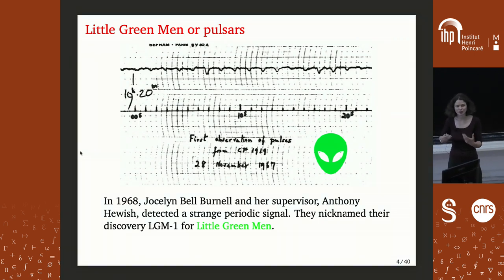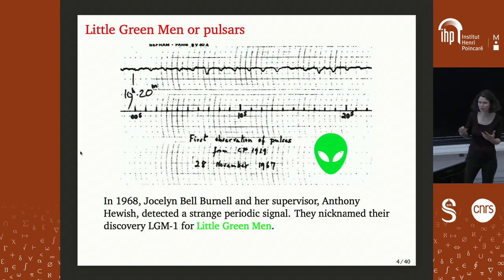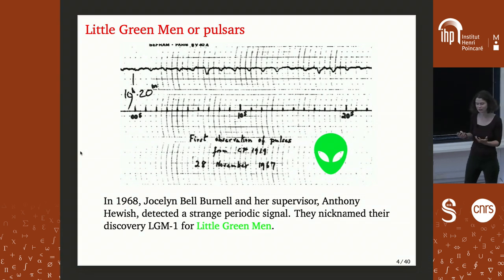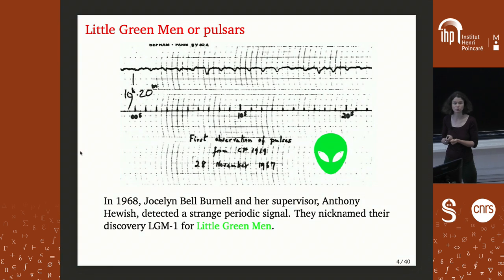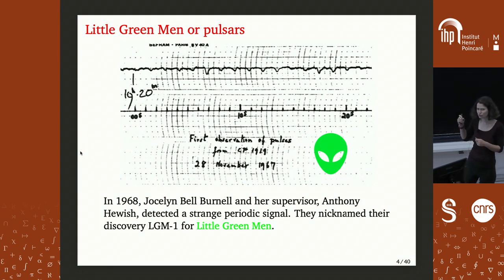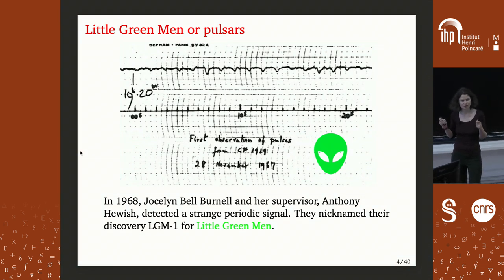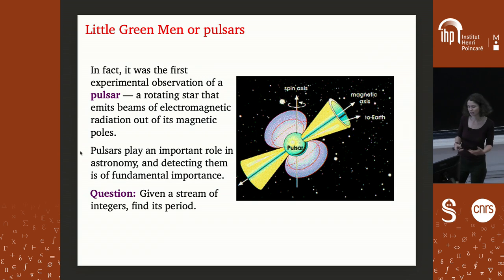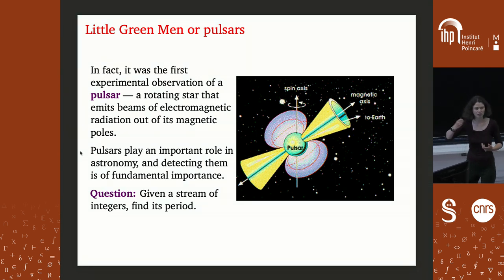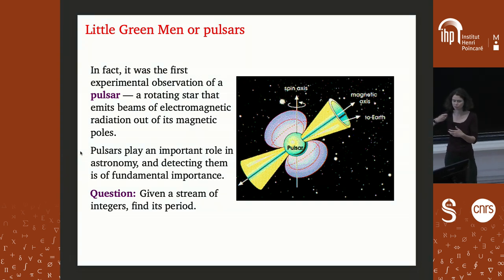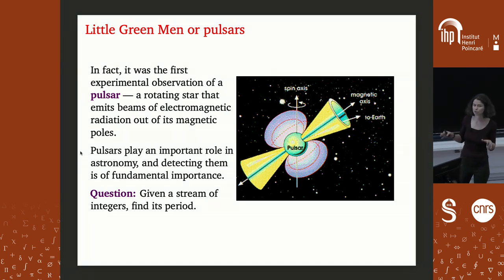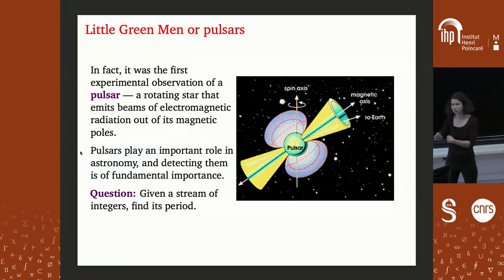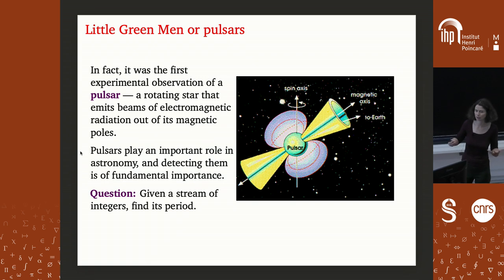Before the algorithms, let me present two applications. The first comes from astronomy: in 1968, Jocelyn Bell Burnell and her supervisor Anthony Hewish discovered a very strange, very periodic signal from space. At first they thought it might be aliens, but it turned out to be the first experimental observation of a pulsar — a rotating star emitting magnetic radiation — and detecting such periodicities in signals can be done with pattern matching.